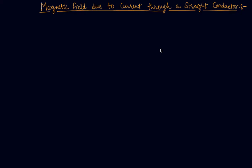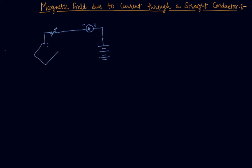Hello students, my name is Sumit Mehta. Today in this lecture we will discuss about the magnetic field through a straight conductor. Here I am drawing a circuit diagram showing a battery, an ammeter, a variable resistor, and a sheet where we will see the deflection of the magnetic field.